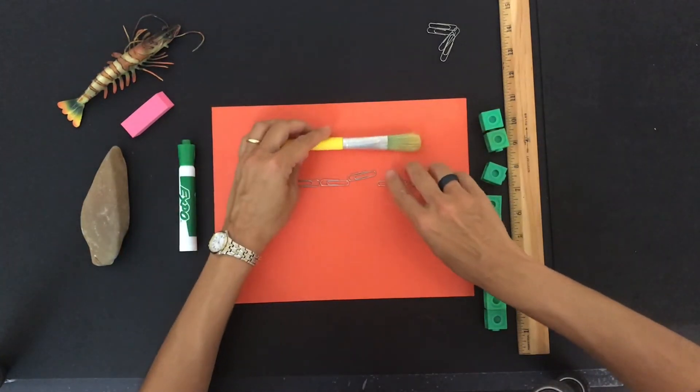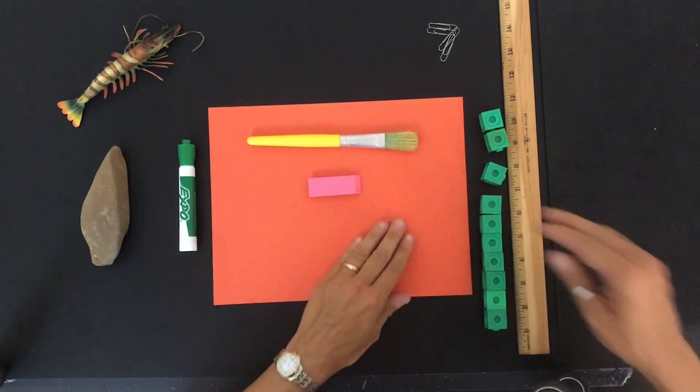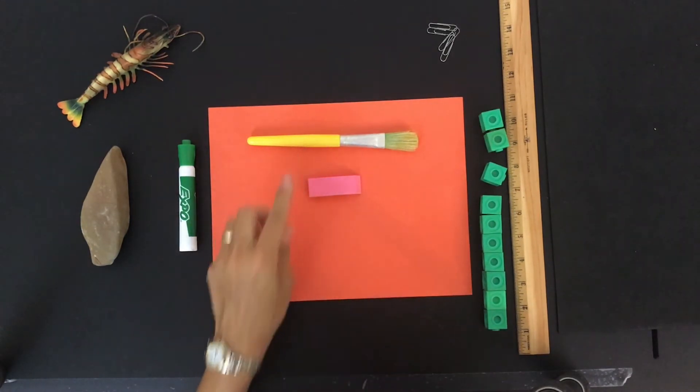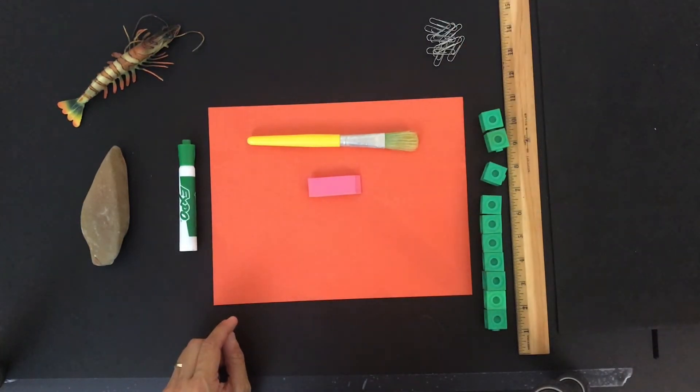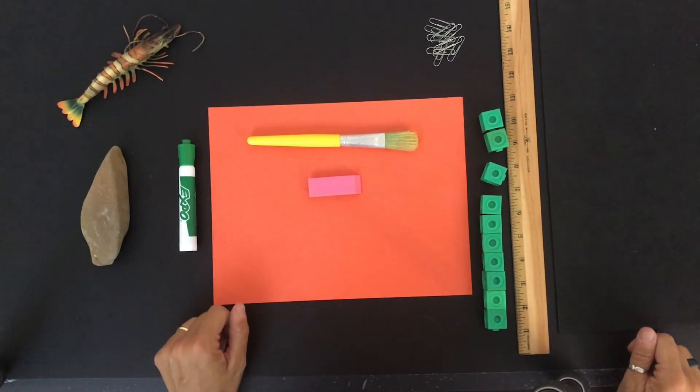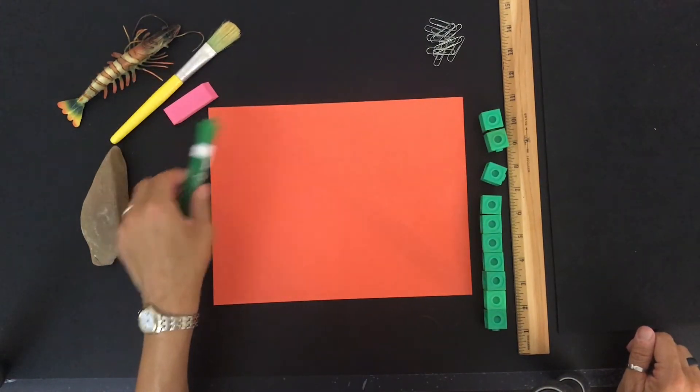So which one was longer? Was the paintbrush longer or the eraser? That's right. The paintbrush was longer. Which one's shorter? That's right. The eraser is shorter.